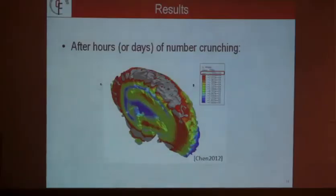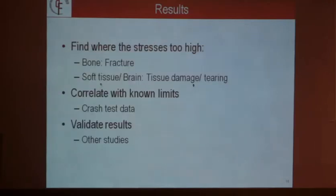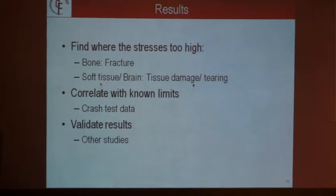After hours, days, or weeks of number crunching, you get output like this — from a paper I've been reading — showing the stress distribution across the skull and brain. We're looking at where stresses on the brain are too high, because that causes tissue damage, and where stress on the skull would cause a fracture. This gives us an understanding of what forces are too much for different people to handle. We can correlate that with crash test data from motor vehicle safety and with many other studies to make sure the numbers we're getting are reasonable and our results are valid.